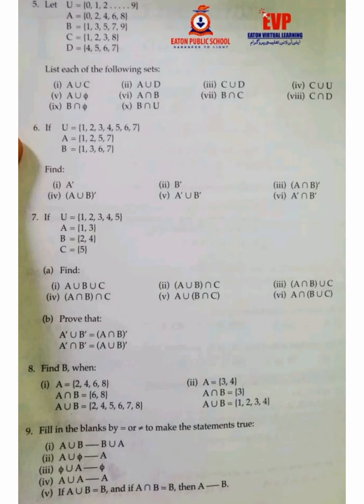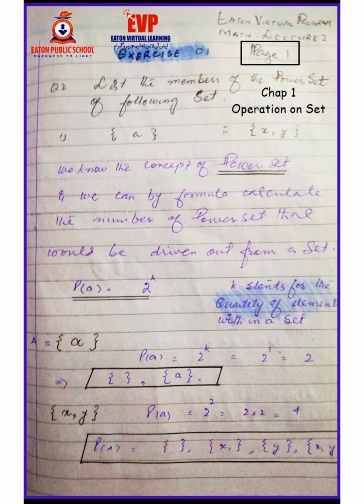Looking at the first question, we are asked to derive all the power sets from a given set. Question number two, part one has a set containing a single element A, and part two has a set containing two elements X and Y. The power set is the collection of all possible subsets of a set.